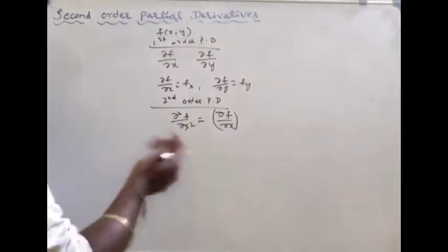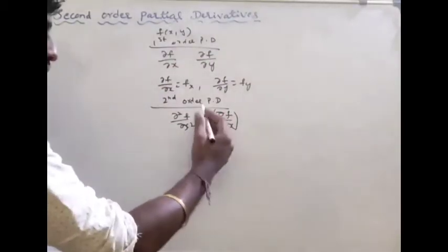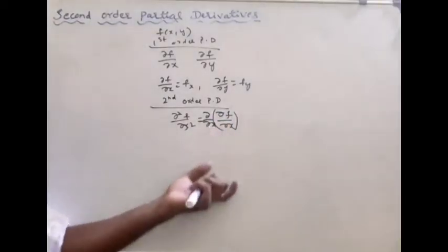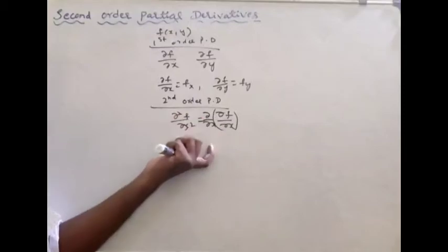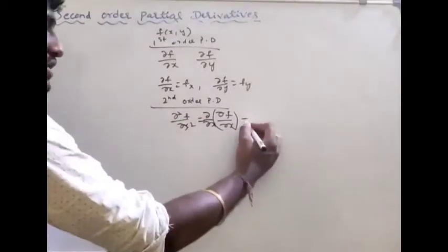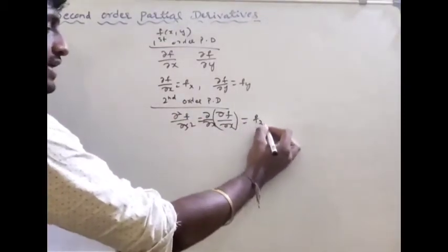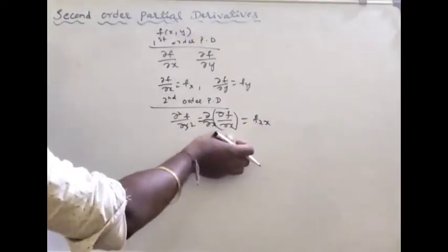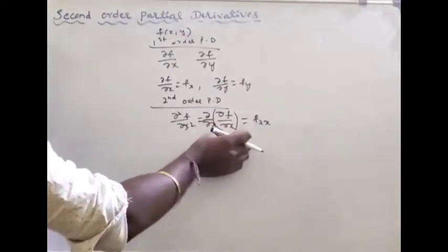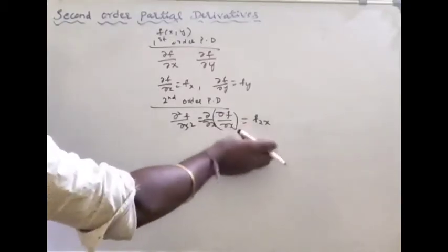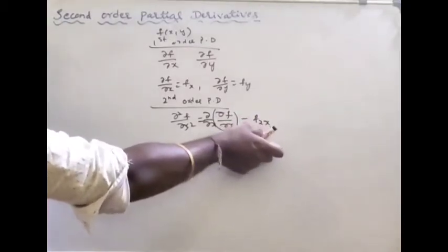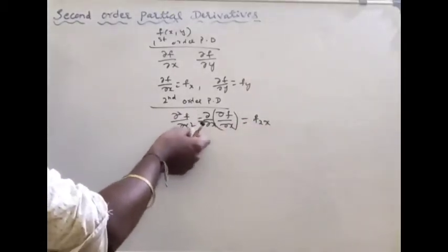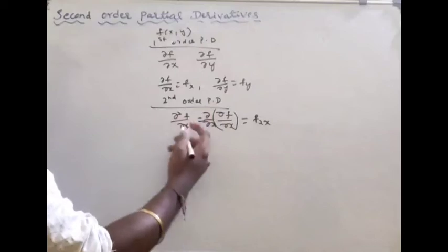Again with respect to x, we take the partial derivative. This gives us dou square f by dou x square. First with respect to x, partial derivative, then again with respect to x, partial derivative. The answer is the second-order partial derivative with respect to x: dou square f by dou x square.